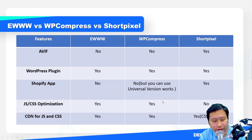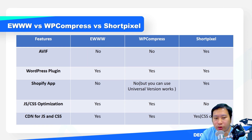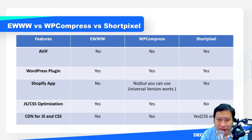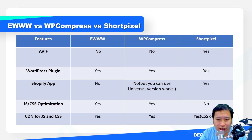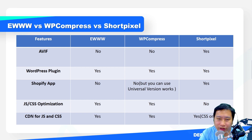For AVIF file format, Ewww and WP Compress do not provide AVIF support at the moment. Short Pixel does provide AVIF, however, creating an AVIF image will also consume an additional credit as well.